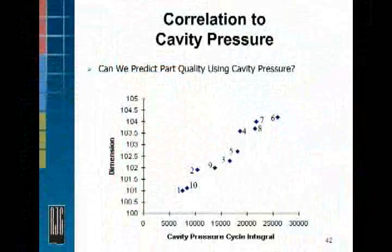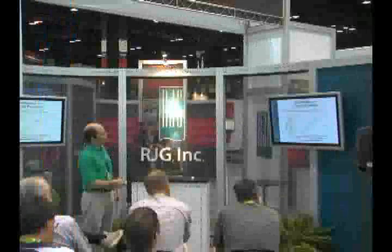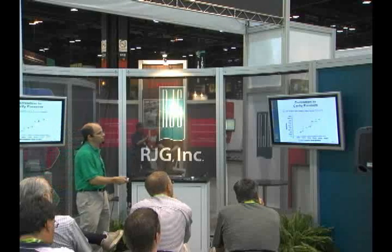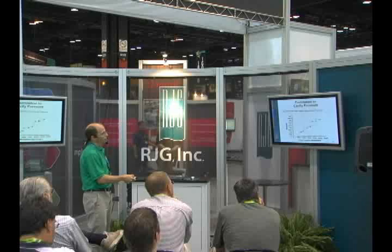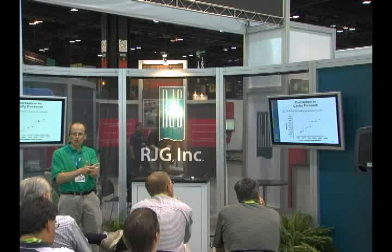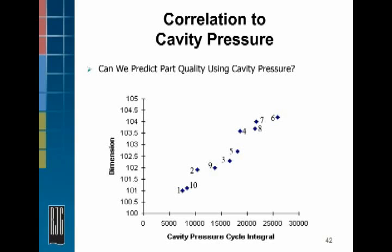So here's what that looks like. We're going to plot cavity pressure cycle integral — the area under the cavity pressure curve that we know tends to correlate with part dimensions. Here's our experimental condition number one: our low hold pressure, low fill speed, low melt temperature gives us our smallest part, and it also has the lowest area under the curve. Condition number six is our high fill speed, high hold pressure, high melt temperature — gives us the most pressure inside the cavity and our biggest parts. And what we notice is that we've got a nice, kind of straight line fit here. There's a general correlation.